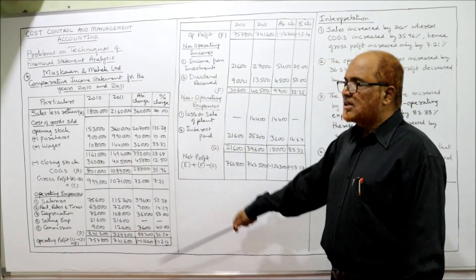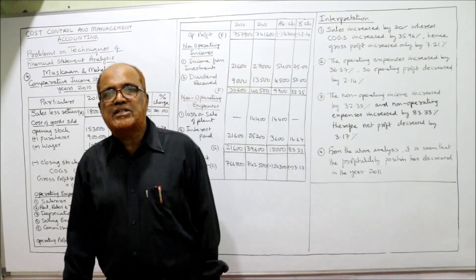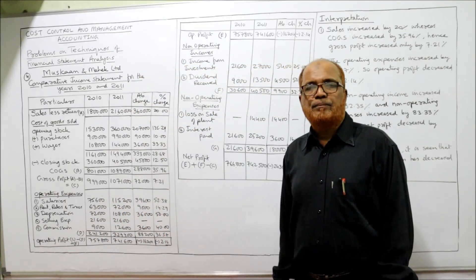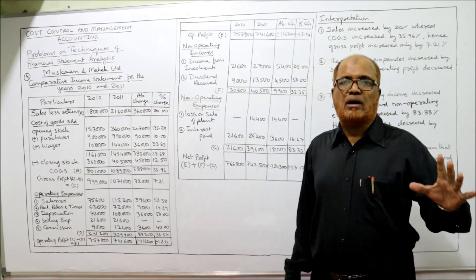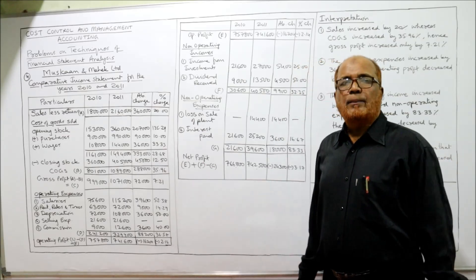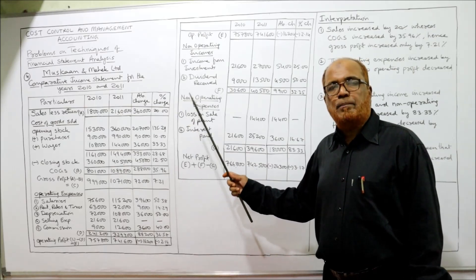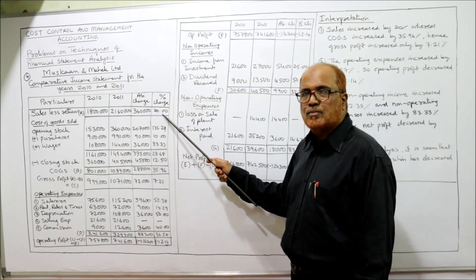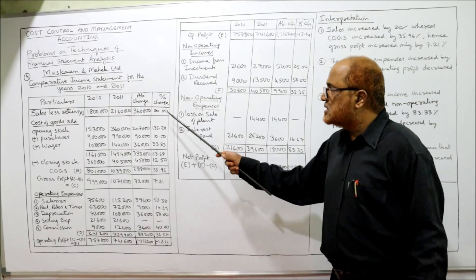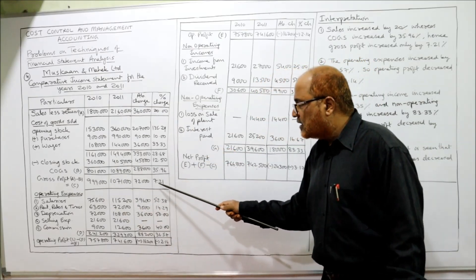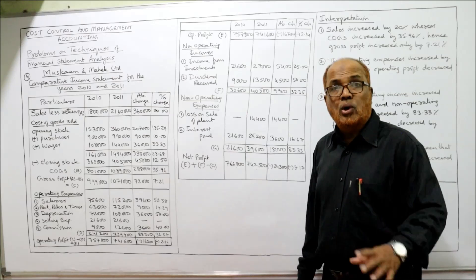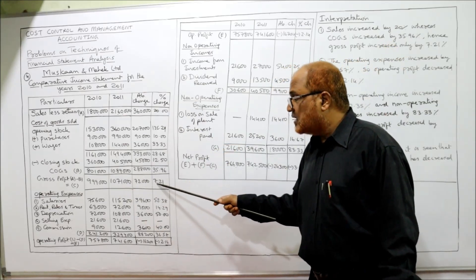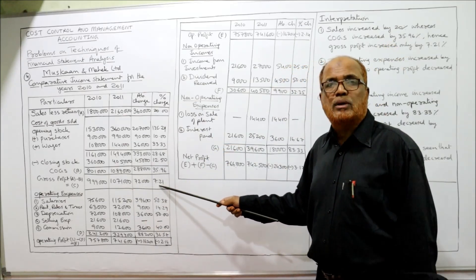After completing the income statement, we need to comment on the profitability position of the company based on these percentages. First, compare the percentage change in sales and gross profit. Sales increased by 20%, whereas gross profit increased only by 7.21% — a significant difference.